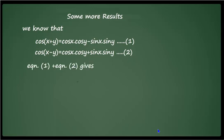If you add equation 1 and equation 2, you will get cos(x+y) plus cos(x−y) on the left-hand side. On the right-hand side, the sin x sin y terms — one negative and one positive — cancel each other, and what remains is 2 cos x into cos y.